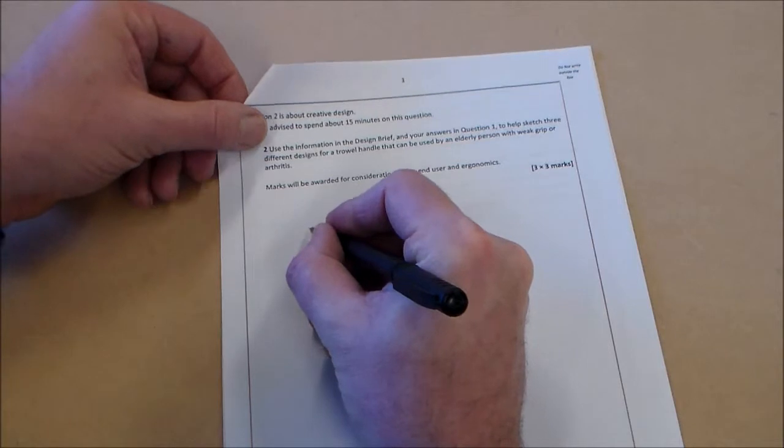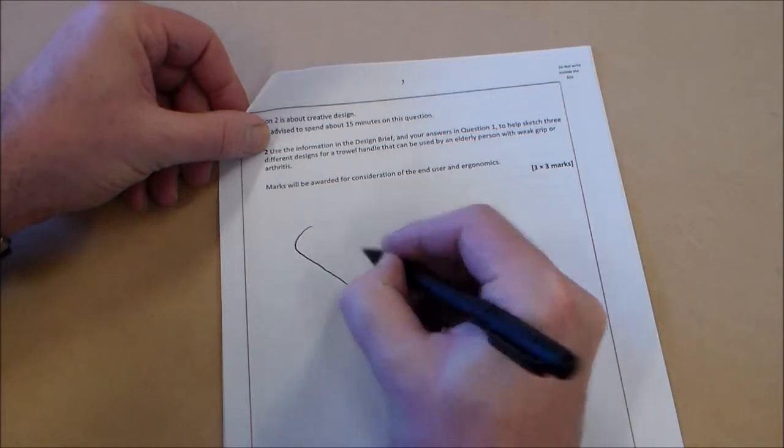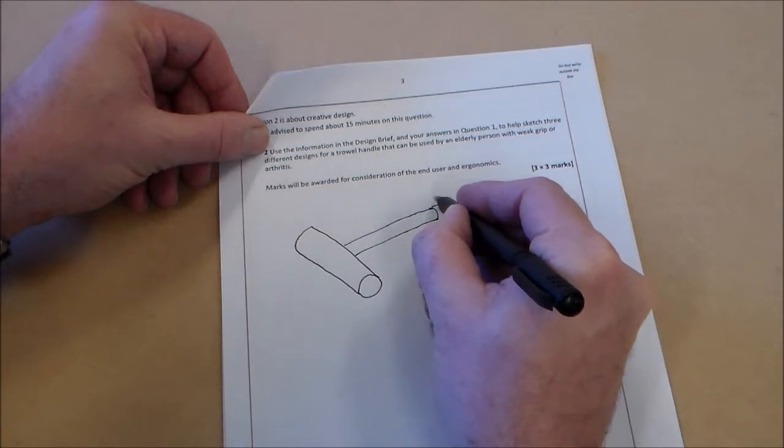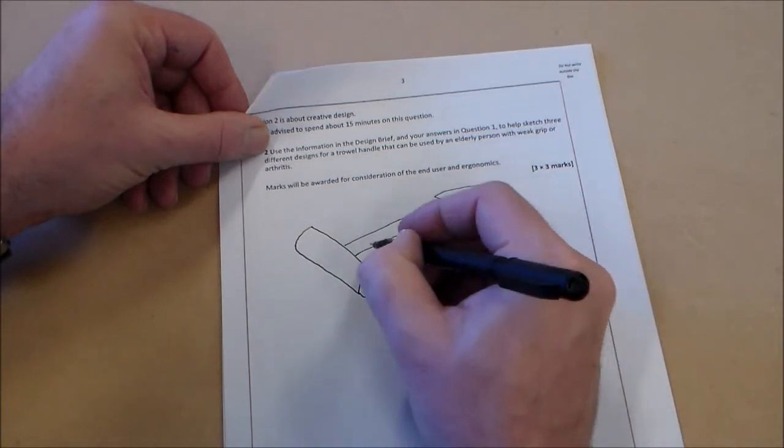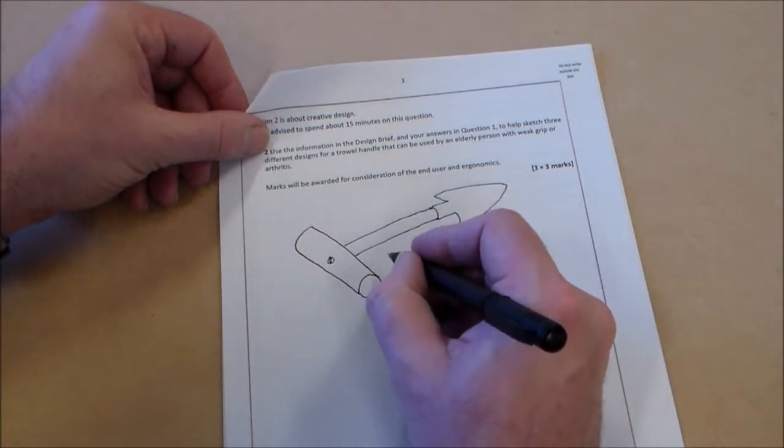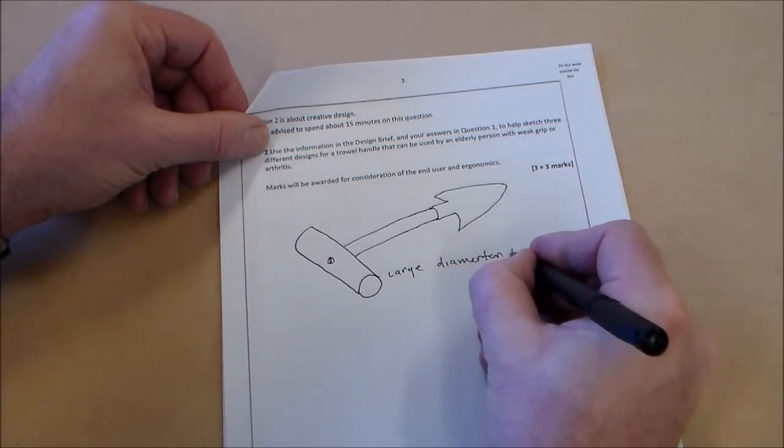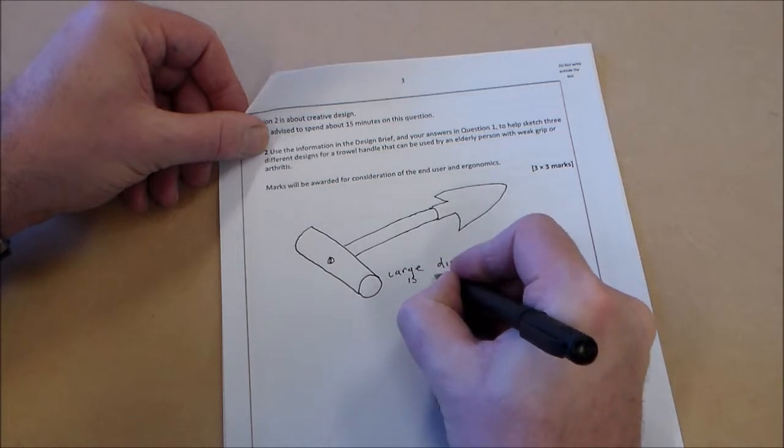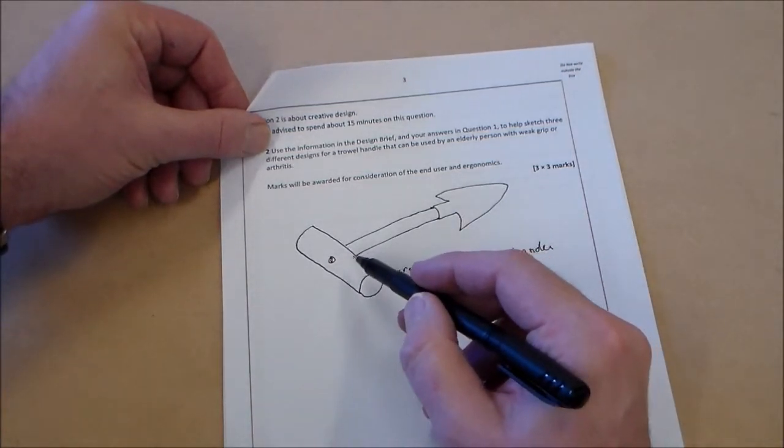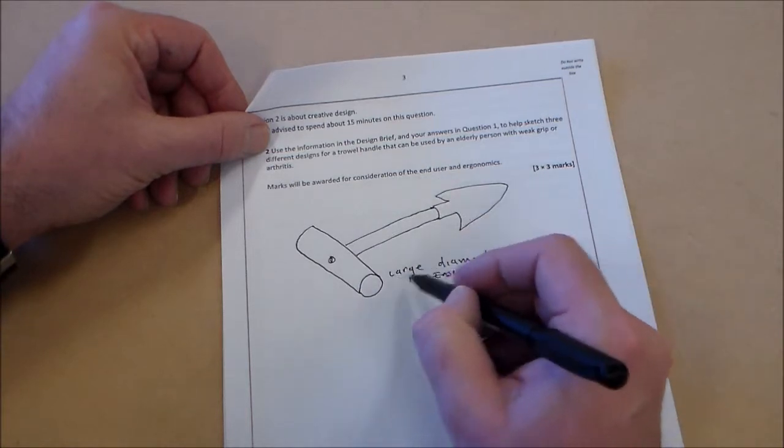I don't know if I'm going to draw the handles or draw the whole thing, but I'll start off. Now, draw them quite clearly. Don't do them too small. The first one, I'm just going to draw a very simple kind of T design for a handle. I will put the little spade bit on there, but like I say, you could leave that off and get the same marks. Just put a little screw on there. And then I'm going to say, it's the consideration of the end user. So I'm going to say, large diameter handle is easy to grip. And it's as simple as that. I've just modified by putting a cross piece on there. I haven't said anything about the materials because it's not asking me that yet. And my consideration of the end user is that it's large and it's easy to grip.